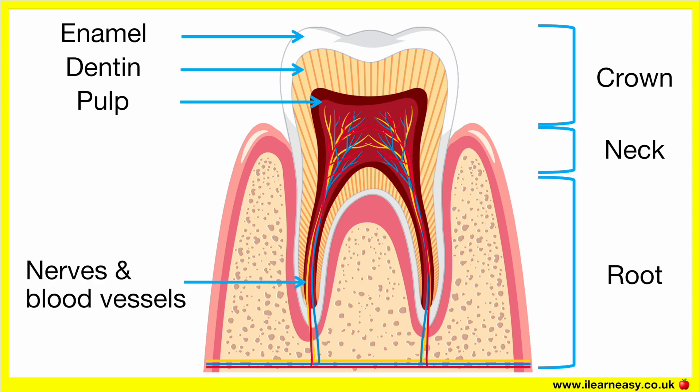The nerves and blood vessels within a tooth are crucial for its function. They supply nutrients, maintain tooth health, and provide sensory feedback, helping to protect the tooth from harm. The nerves, particularly in the pulp, allow the tooth to sense pain, pressure, and temperature changes. The blood vessels deliver oxygen and essential nutrients to the pulp and dentin, ensuring the tooth remains alive and functional.